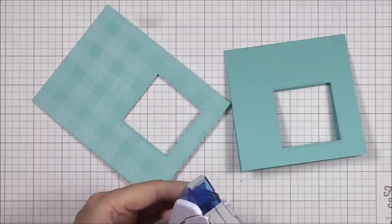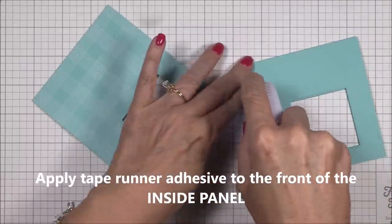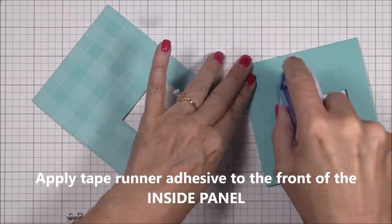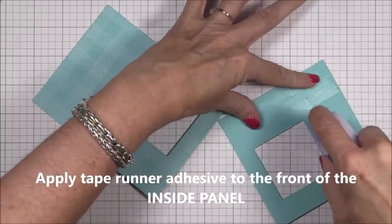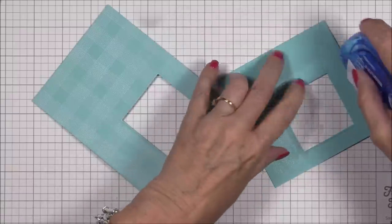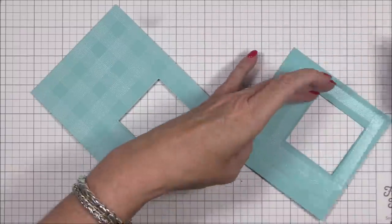Now I'm going to apply tape runner adhesive to the front of the inside panel. Make sure you apply it along all of the outside edges and around the aperture. Part of the fun of this technique is to make it look seamless when you open and close the card, so making sure everything is good and stuck is important.